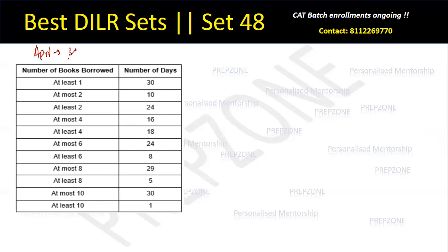April has 30 days only. It says at least one book is ordered on all 30 days, which means there is no day where zero books were ordered — so n0 = 0. Here, nr represents the number of days on which exactly r books are borrowed. 'At least one = 30' means n1 + n2 + ... + n10 = 30. Also, 'at most 10 books ordered on all 30 days' means n1 through n10 must account for the full 30 days.